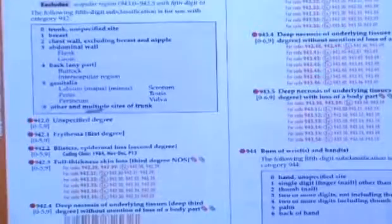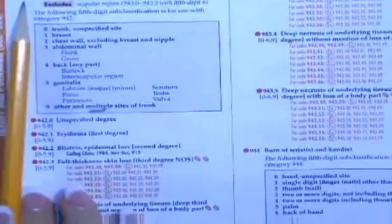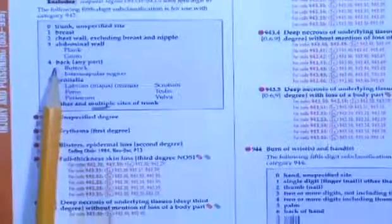we're going to say okay 942 of the trunk and then the third degree is going to be 0.3 and then we come up to the fifth digit box, it's going to be 4. So 942.34 is going to be the code for that.